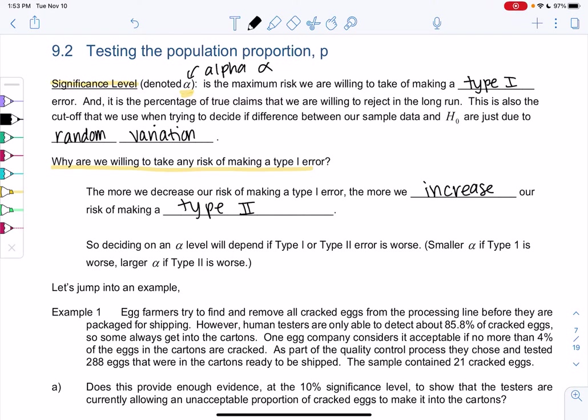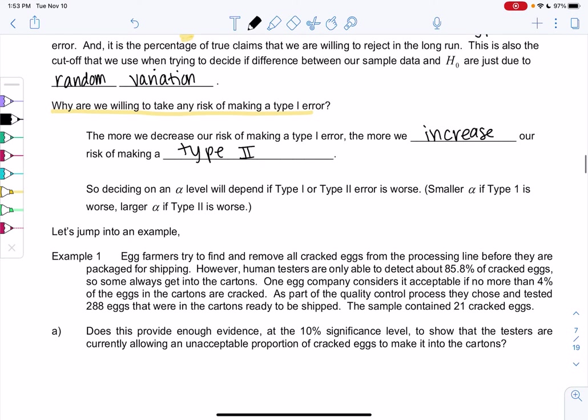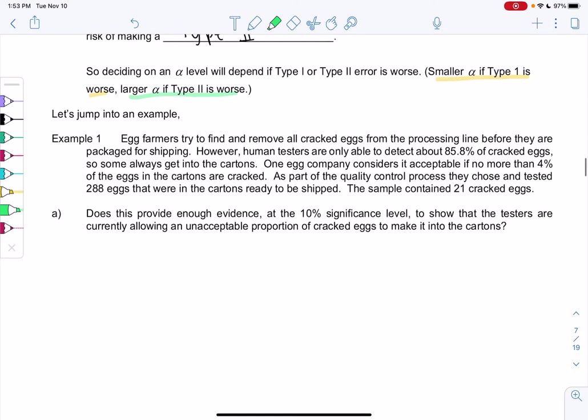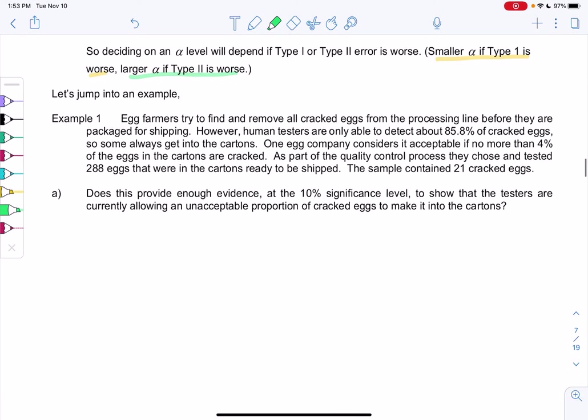So deciding on an alpha level will depend on if type 1 or type 2 error is worse. We use smaller alphas when type 1 is worse and slightly larger alphas when type 2 is worse. I'm going to immediately do an example and then explain the process. It's one of those things you kind of have to see it, maybe not fully understand it, and then we'll talk about all the steps.